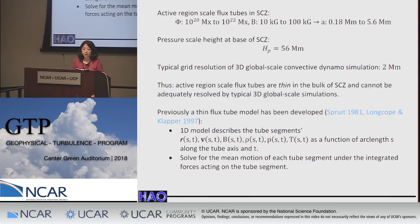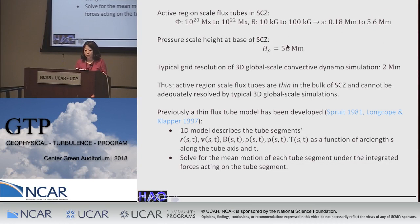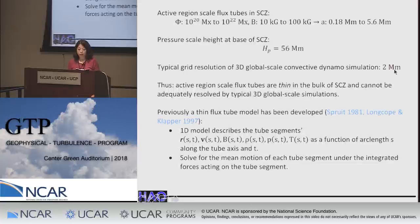Active region-scale flux tubes at the bottom of the convection zone span a magnetic flux range of 10^20 to 10^22 Maxwell. Given field strengths at least in equipartition with convection in the deep convection zone, the size-scale radius of the tubes is thin compared to the local pressure scale height. These tubes cannot be well resolved by typical 3D global-scale MHD simulations, and so the magnetic buoyancy instability of activation-scale tubes cannot be well represented in three-dimensional simulations.